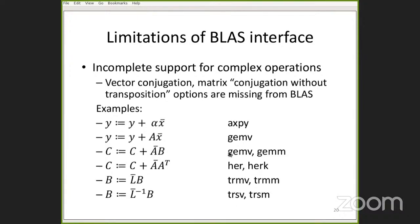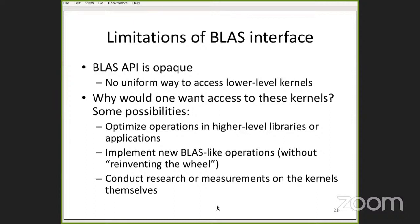Another way the BLAS interface is limiting is that it has incomplete support for complex operations. There are no instances in the BLAS where you can simply conjugate an operand implicitly as part of the operation. You can transpose, you can Hermitian transpose — which is conjugation and transposition — but you can't just conjugate. The BLAS API is also opaque: there's no agreed upon way to access the lower level kernels. It's heavily implementation dependent. Maybe the library will export access to those APIs, maybe it doesn't. There's no standard there.